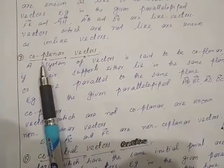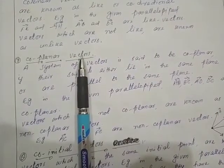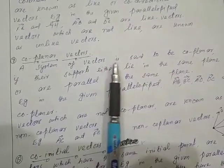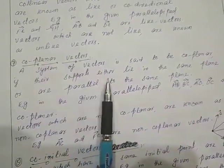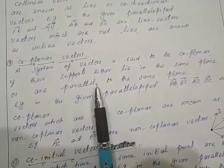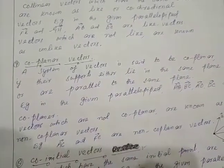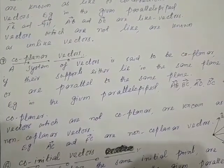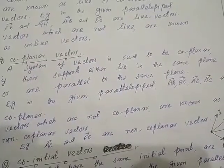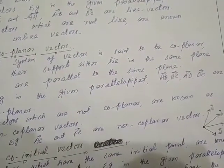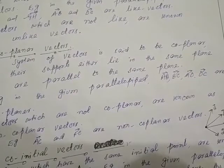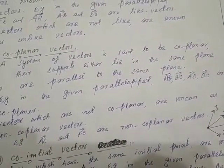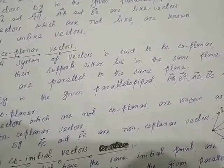Assalamualaikum dear students, we are on the concept of types or classes of vectors. So far we have discussed six of them. Now the seventh type of vector is called coplanar vectors. A system of vectors is said to be coplanar if their supports either lie in the same plane or are parallel to the same plane.